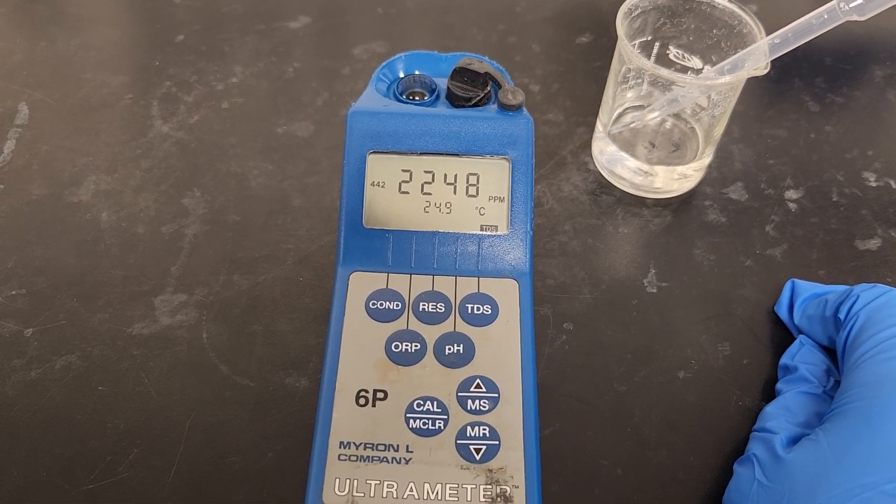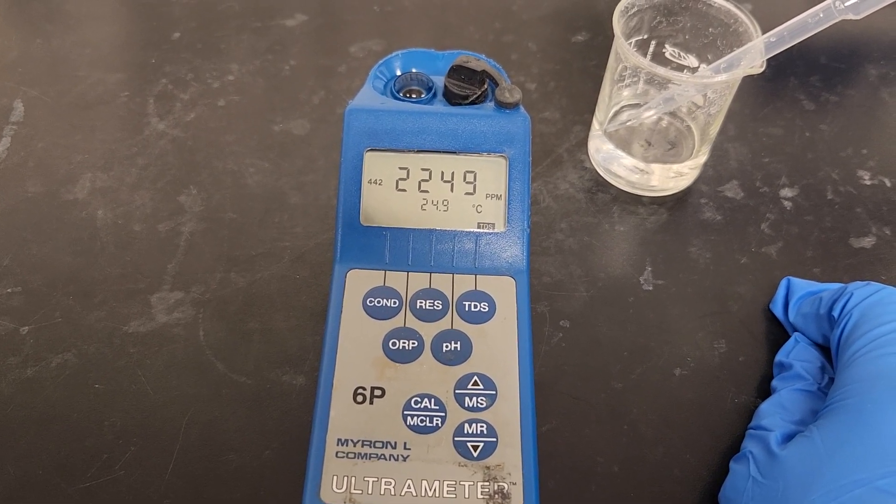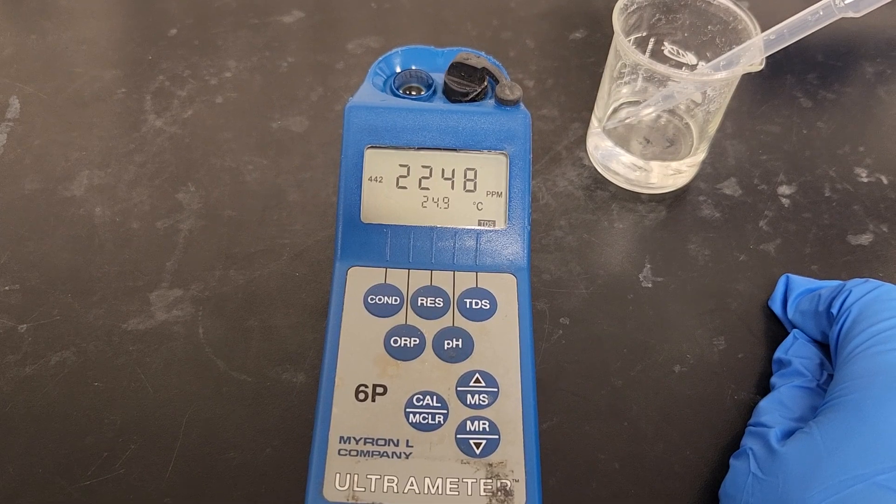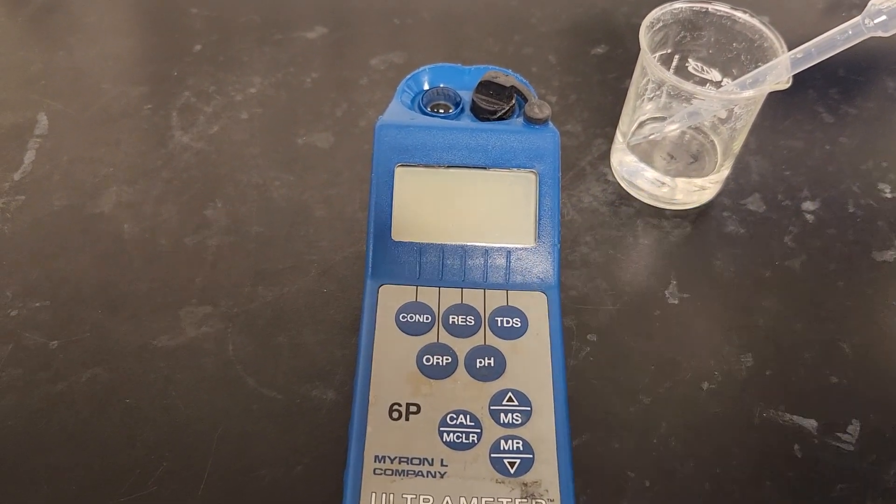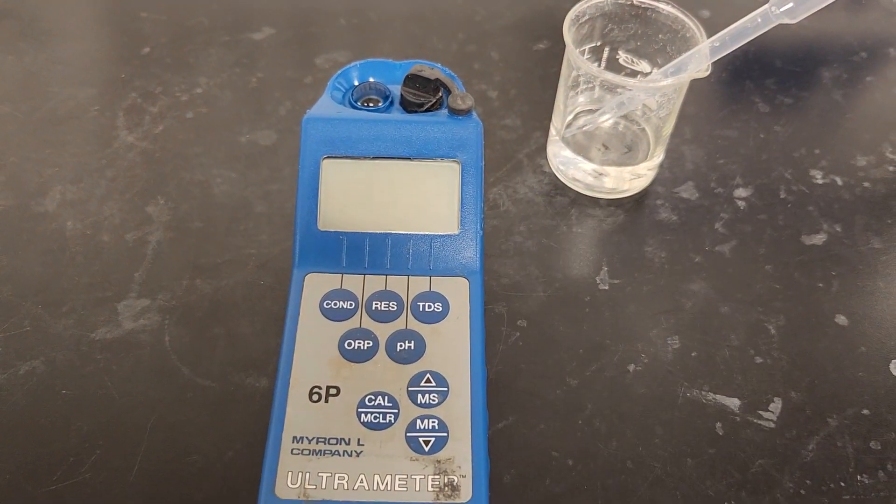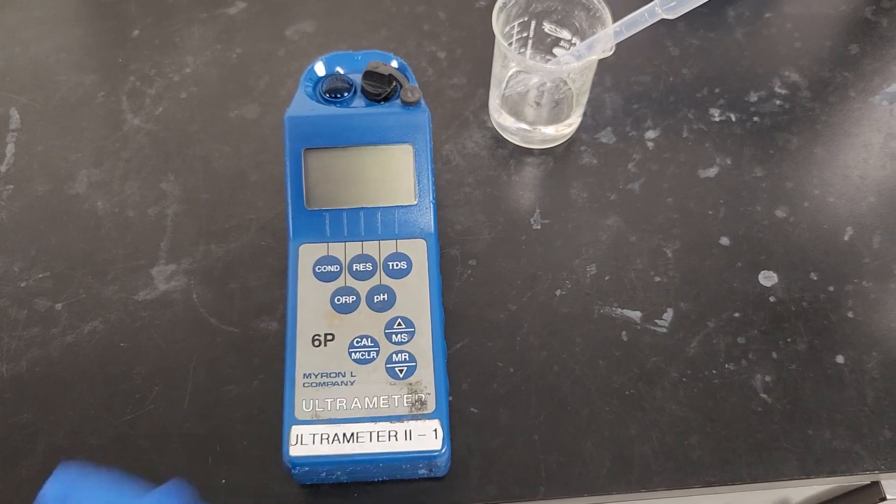So right now it's giving us 2249, 2249, 2248, which is in that range. So I like to lock it, so what we'll have is 2248. I will record that value down and still with the same sample I now want to measure the conductivity of that sample.